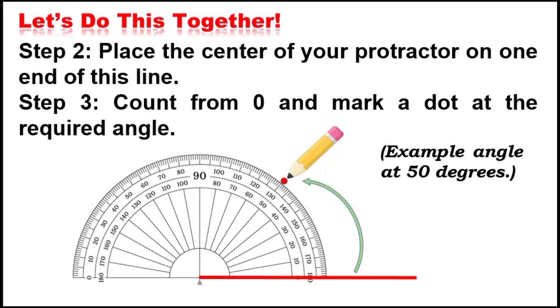Place the center of your protractor on one end of this line. Count from zero and mark a dot at the required angle. Example angle: mark at 50 degrees.